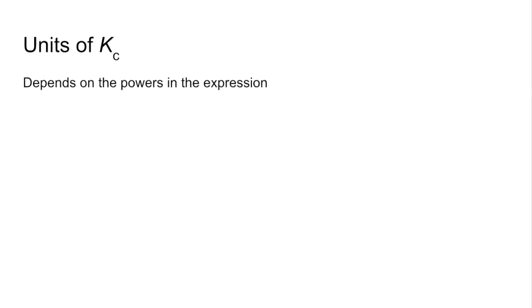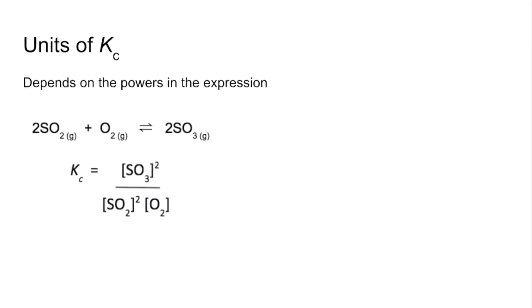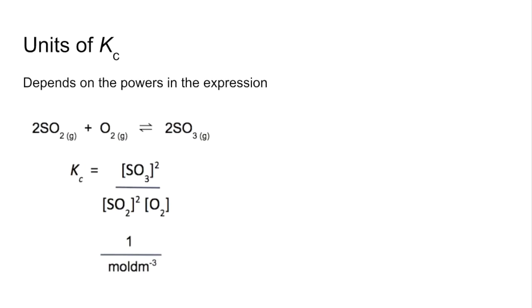Now we'll look at the units of Kc. These can vary, and it all depends on the powers in the expression. In the first example, the units work out as moles per decimetre cubed squared on the top, divided by moles per decimetre cubed cubed on the bottom. That cancels to 1 over moles per decimetre cubed, and bringing everything to the top gives decimetres cubed per mole.